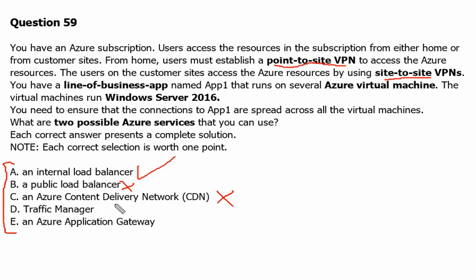Traffic Manager is a multiple-region, public-facing solution. Option E is a layer 7, or application layer, load balancer that can distribute traffic based on various criteria such as URL path, host headers, and cookies. It can also perform SSL offloading, session affinity, and URL-based routing.